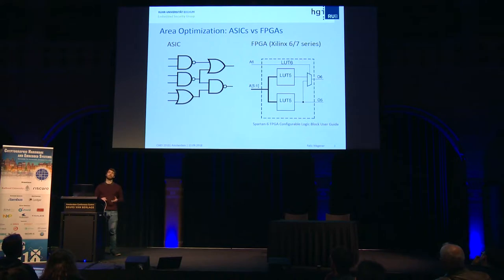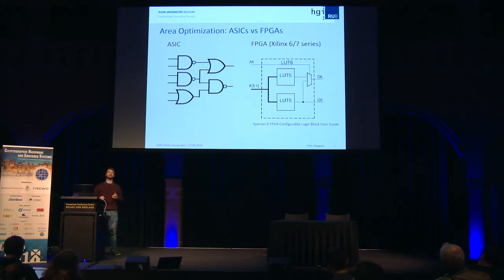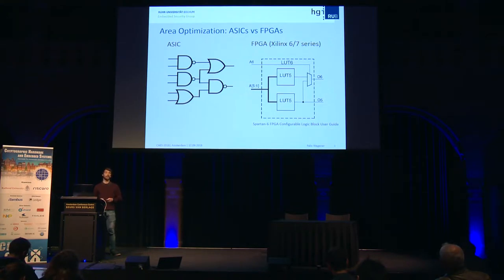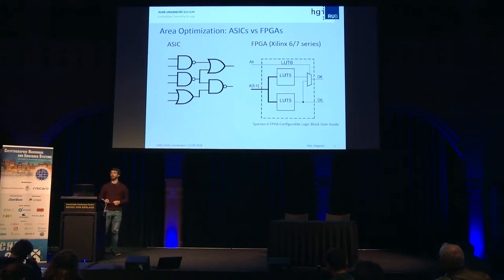If you try to do area optimization on FPGAs, you have to think about very different things. You have to break down your function into components, and what matters most is how many input bits something depends on. It does not matter as much what the algebraic degree is, or the multiplicative complexity. You should not waste the inputs you have — you should always use all six input bits to hide a complex function in a lookup table.